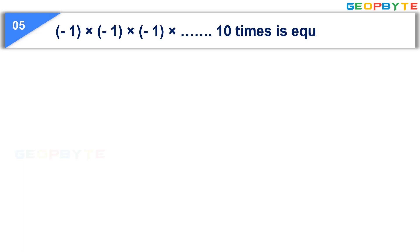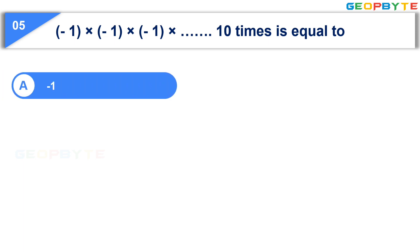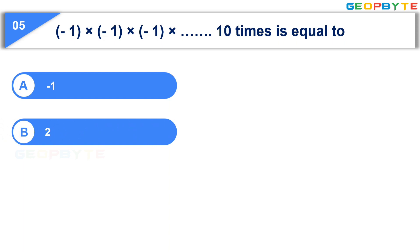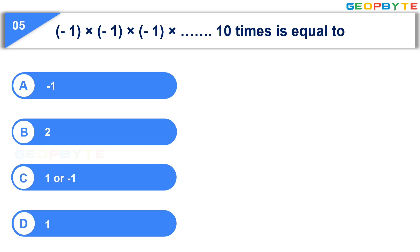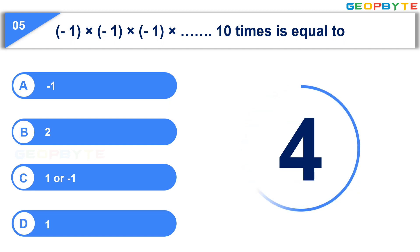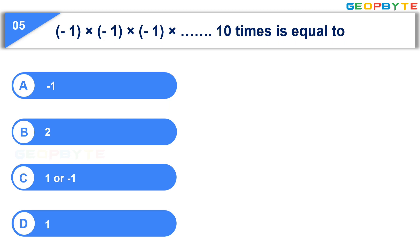The fifth question: Minus 1 multiplied by itself 10 times is equal to — Option A: minus 1. Option B: 2. Option C: 1 or minus 1. Option D: 1. Your time starts now. Your time is up. And the correct answer is Option D: 1.